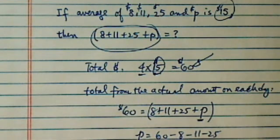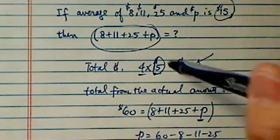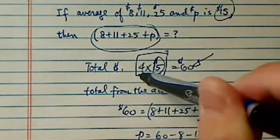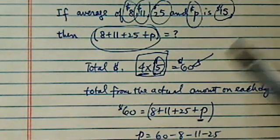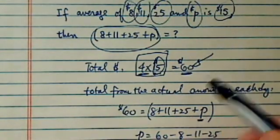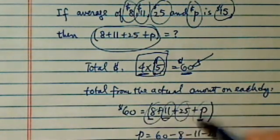So the important concept is, when they give you the average, you need to multiply by the number of items (or number of days you worked) to find out what the total is. And that total can also be achieved by adding what you actually had for each day.